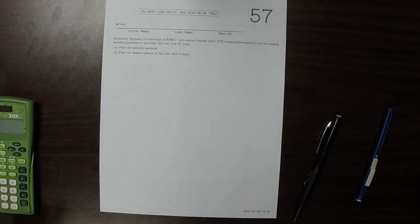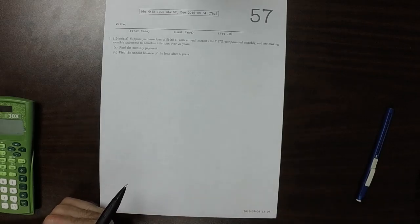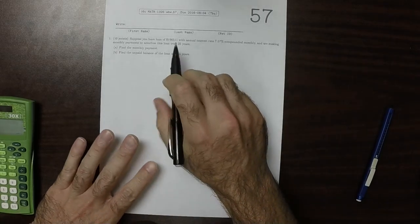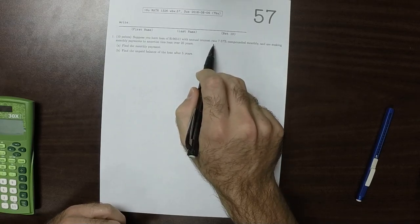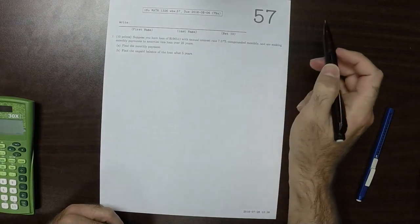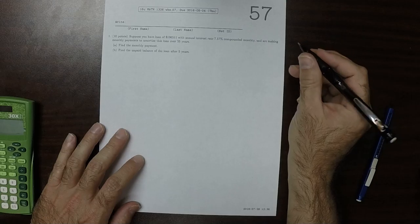This is the answer to written homework 57. We have a loan of this amount and this annual interest rate that's compounded monthly, and we're making monthly payments to amortize it over 25 years. Find the monthly payment.